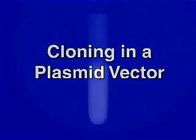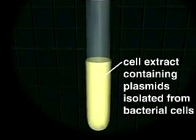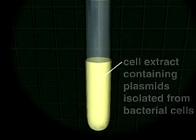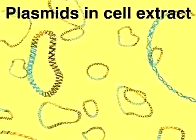DNA cloning is a method for isolating a particular sequence of DNA from a complex mixture of different DNA sequences. In order to clone a fragment of DNA, we need to insert it into a vector, usually a highly modified phage or plasmid, that can replicate in a host cell.